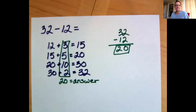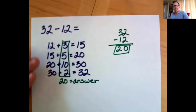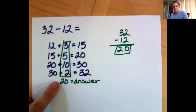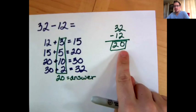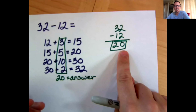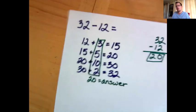I don't want to focus too much on 32 minus 12 because I think it's a bad example for this method — nobody would solve it this way. Hopefully you can do 32 minus 12 in your head. So let's do a more challenging problem that will really show the benefit of this method.